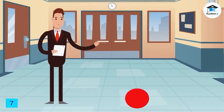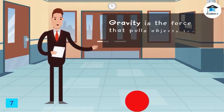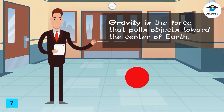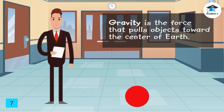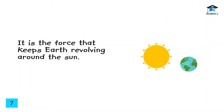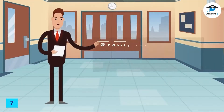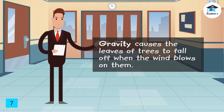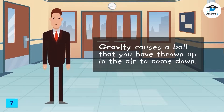A certain kind of force attracts people and objects to the ground. Even if you throw an object up in the air, it will come down because of gravity — the force that pulls two objects toward each other. Gravity pulls objects toward the center of the Earth, keeps Earth revolving around the sun, keeps us from floating, causes leaves to fall when the wind blows, and causes a thrown ball to come back down.